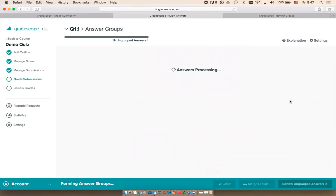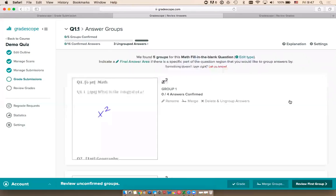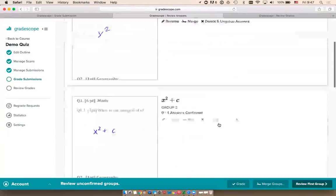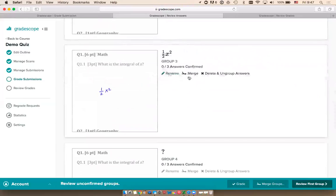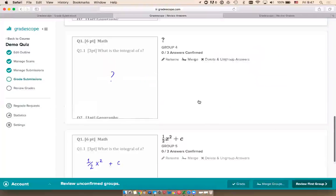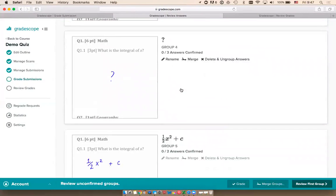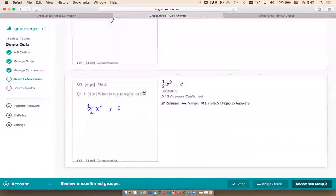What Gradescope is going to do now is look at all of my students' answers and form groups of similar answers. This is a group for all the students who answered x squared, all the students who answered x squared plus C, the students who answered one-half x squared, the students who didn't know the correct answer, and the students who actually got the question correct.